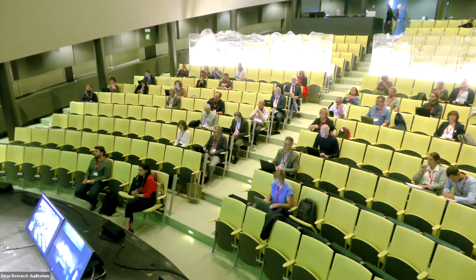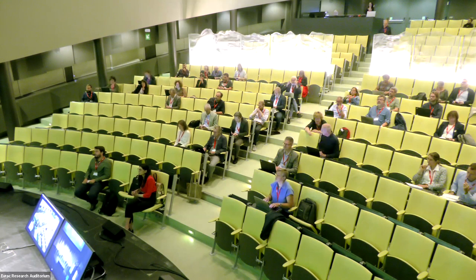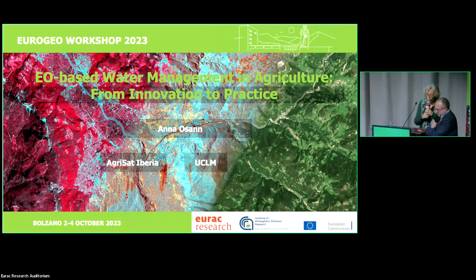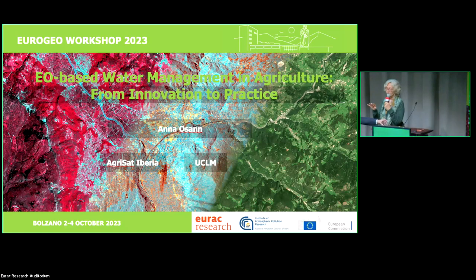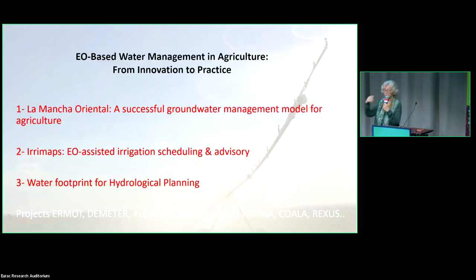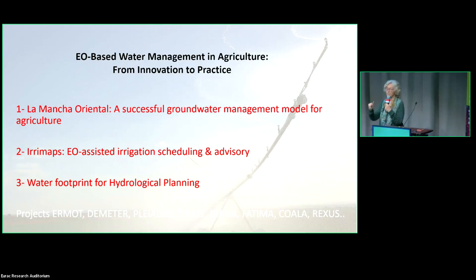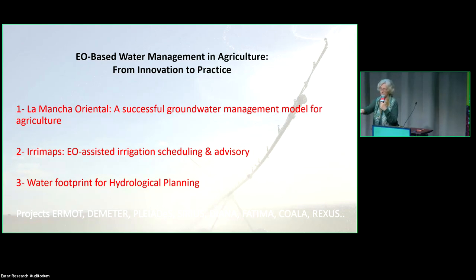Good morning. The most important word in my presentation title is the last one: practice, practice, practice. I will show three different examples at three different scales of agricultural water management, drawing from many projects over the years. Let me tell you a story — the short version. Once upon a time there was an aquifer in the southeast of Spain. People living there were pulling up groundwater to irrigate their crops. They were pulling more and more water, and the water table was going down.